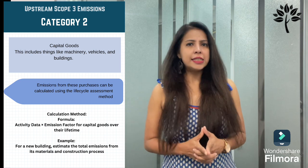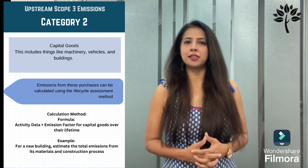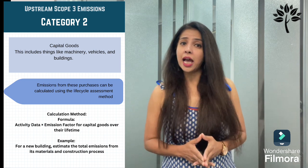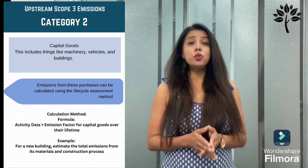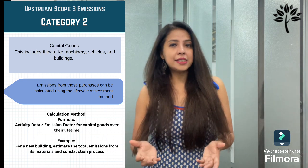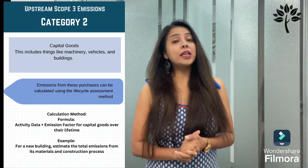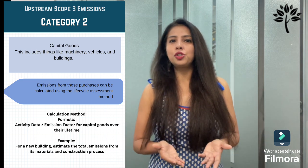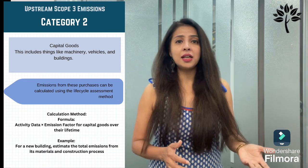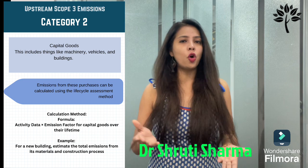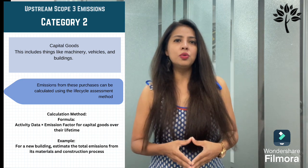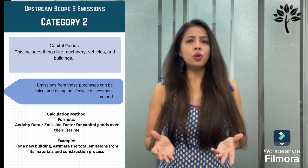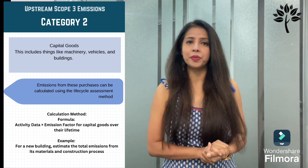Category 2 is capital goods — things like machinery, vehicles, and buildings. Emissions from these purchases are calculated using the lifecycle assessment method, which accounts for how items are produced and shipped to you. Don't forget to track depreciation, as these assets may stay with you for years. The calculation method is: activity data × emission factor for capital goods over their lifetime. For example, for a new building, estimate the total emissions from its materials and construction process.